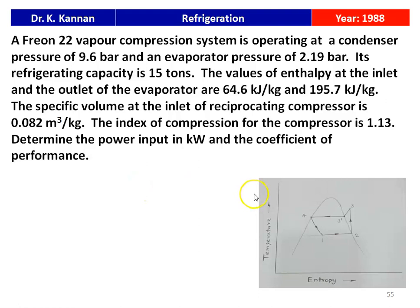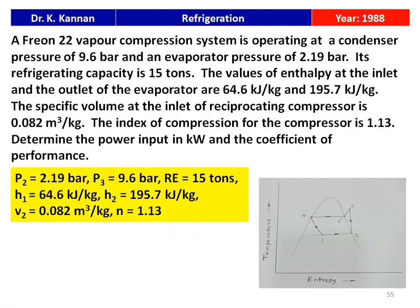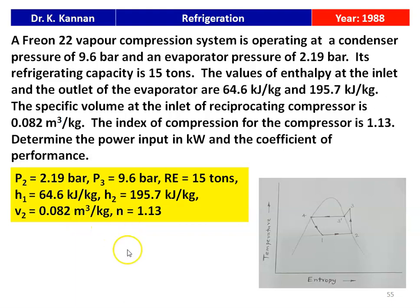This is the standard vapor compression refrigeration cycle. The given data: evaporator pressure P2 = 2.19 bar, condensing pressure P3 = 9.6 bar, refrigeration effect = 15 tons. H1, enthalpy at the inlet of the evaporator = 64.6 kJ/kg; H2, enthalpy at the outlet of the evaporator = 195.7 kJ/kg. Specific volume at the inlet of the compressor = 0.082 m³/kg, and index of compression N = 1.13.